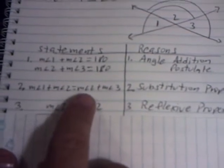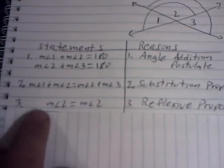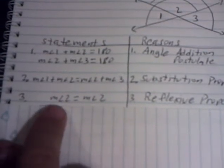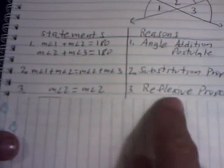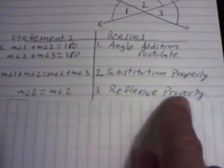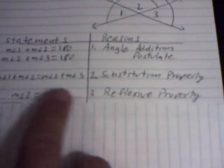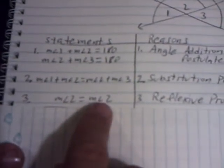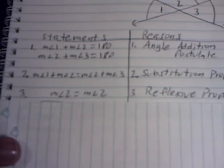We have angle two equals angle two. This is true because of the reflexive property — an angle equals itself. Now, if angle two equals itself and they both share angle two, we can subtract that angle from both sides.